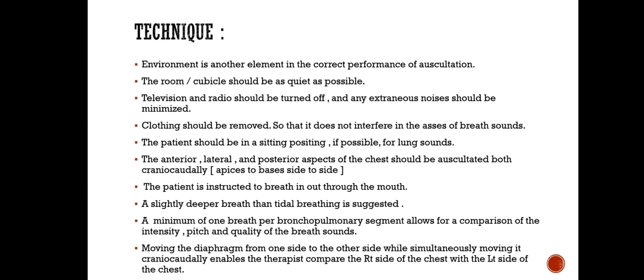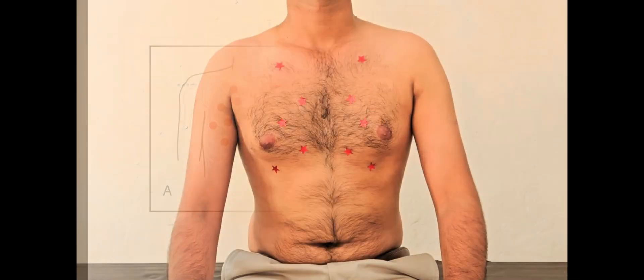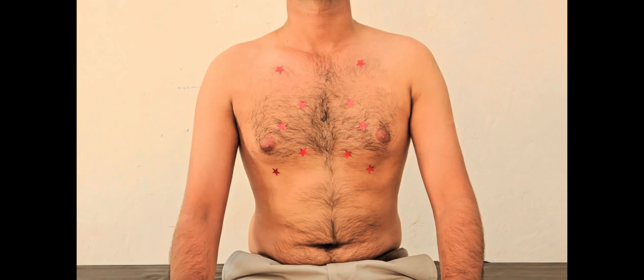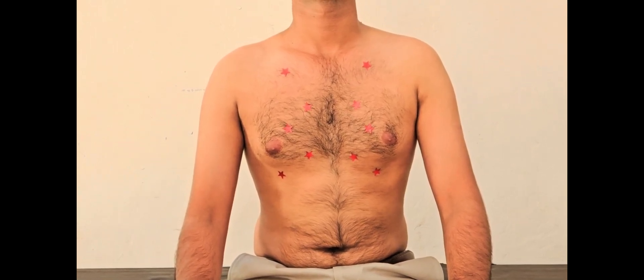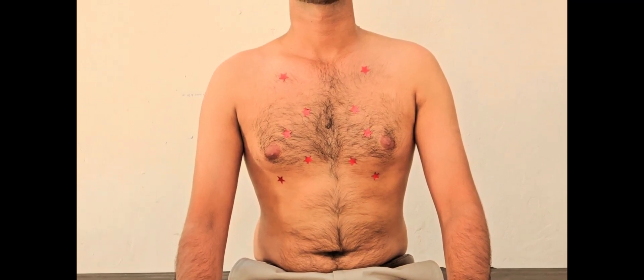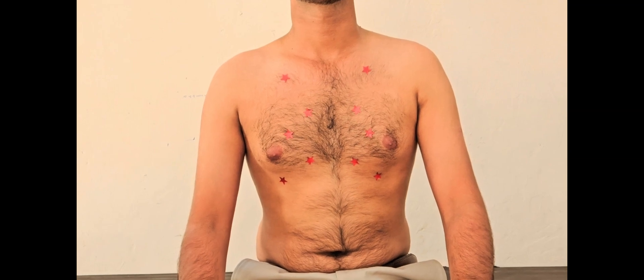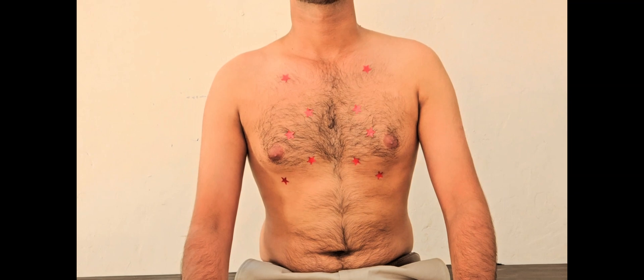Moving the diaphragm from one side to the other while simultaneously moving craniocaudally enables the therapist to compare the right side of the chest with the left side. We will start with the breath sounds, listening with the diaphragm of the stethoscope, starting at the apex of the lung, comparing sides and moving downward in a zigzag pattern to assess all lobes of the right and left lungs.